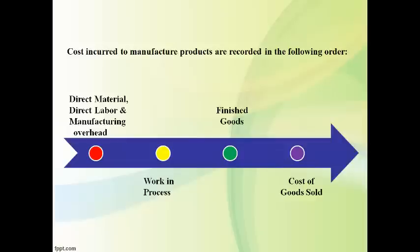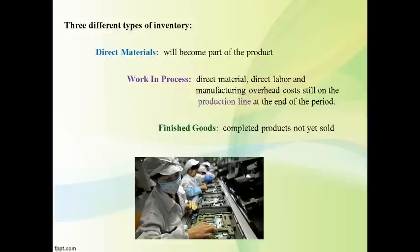Direct materials, work in process, and finished goods are inventory accounts reported on the balance sheet. Direct materials are stored in the direct materials warehouse until they are moved to the production line to become part of the product. Work in process includes all three product costs incurred while the product is being made. Completed products are stored in the finished goods warehouse until they are sold to customers. Manufacturing companies must report the value of each of the three types of inventory on their balance sheet.